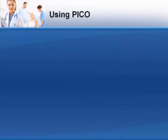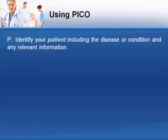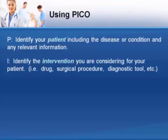The real value of PICO is that it's methodical. This enables you to think through the present problem before you sit down to the keyboard. When you need information, begin by using PICO to break it down. Doing this helps you to separate the most important concepts from the less relevant details. Start by identifying the most important characteristics of the patient, including the disease or condition and any relevant information. Next, describe the intervention you are considering for your patient.